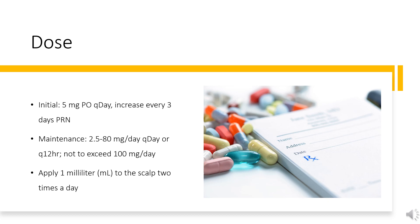For hair growth using the topical solution dosage form: adults apply 1 ml to the scalp 2 times a day; children's use and dose must be determined by the doctor. For the topical foam dosage form: adults apply half a capful to the scalp 2 times a day; children's use and dose must be determined by your doctor.